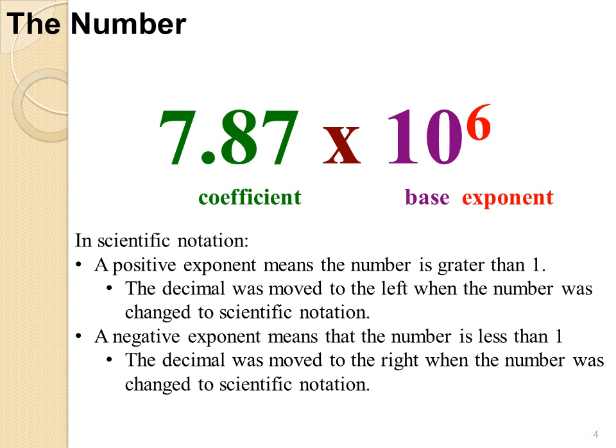If it's a small number that I started with, and I had to move my decimal point to the right in order to make my coefficient between 1 and 9.9 repeating, then my exponent will be negative.